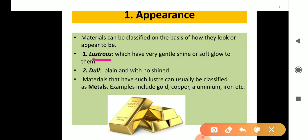Some materials are lustrous and some are dull. Lustre means shine. Lustrous materials are materials which have a gentle shine or soft glow. Those materials which have no shine are called dull materials — they are plain with no shine.